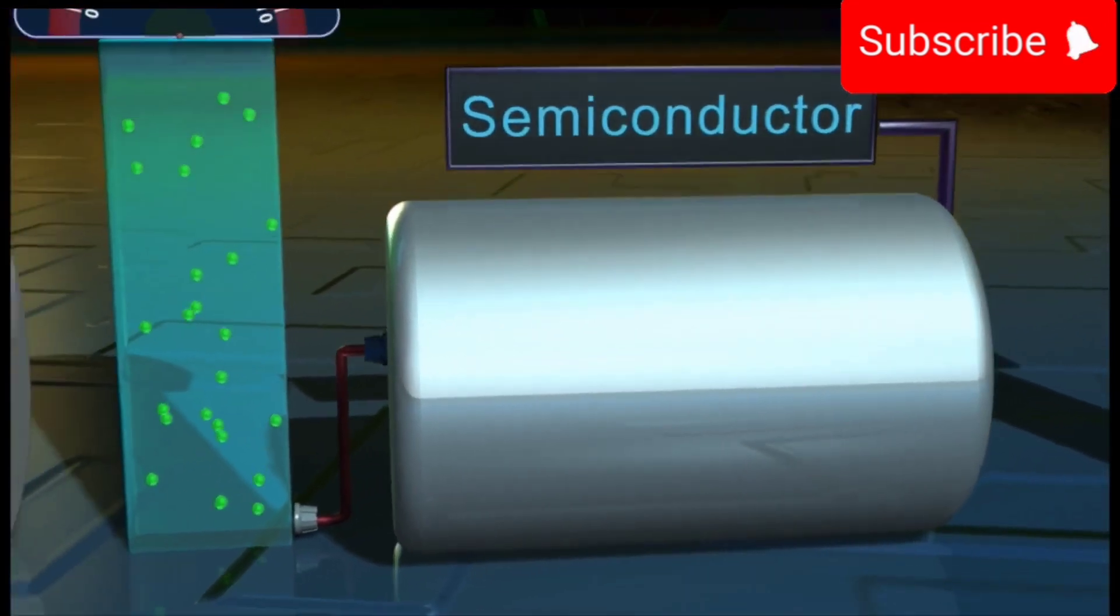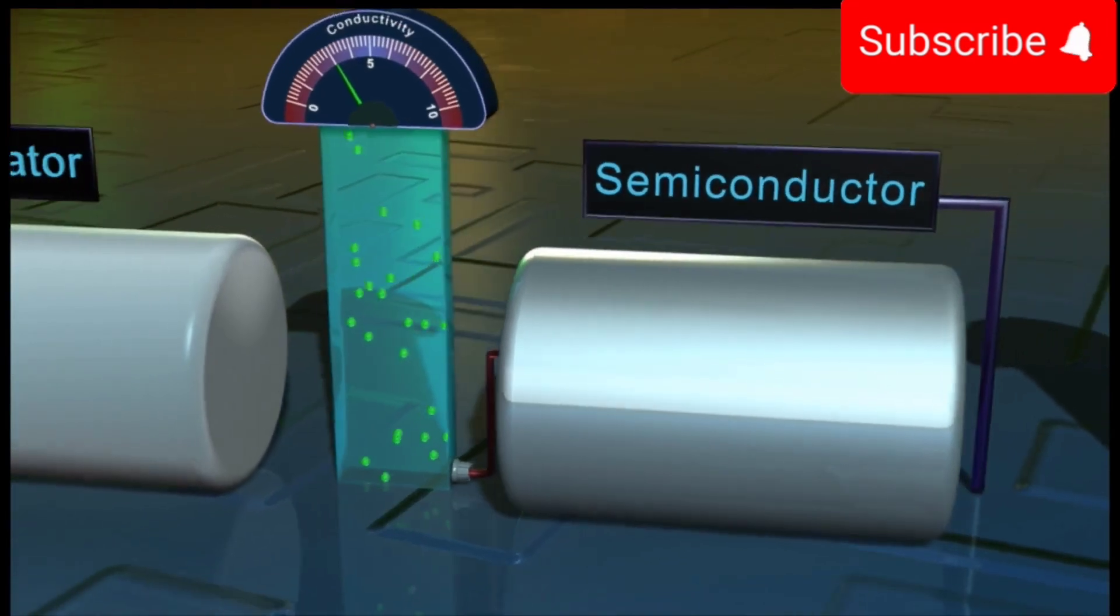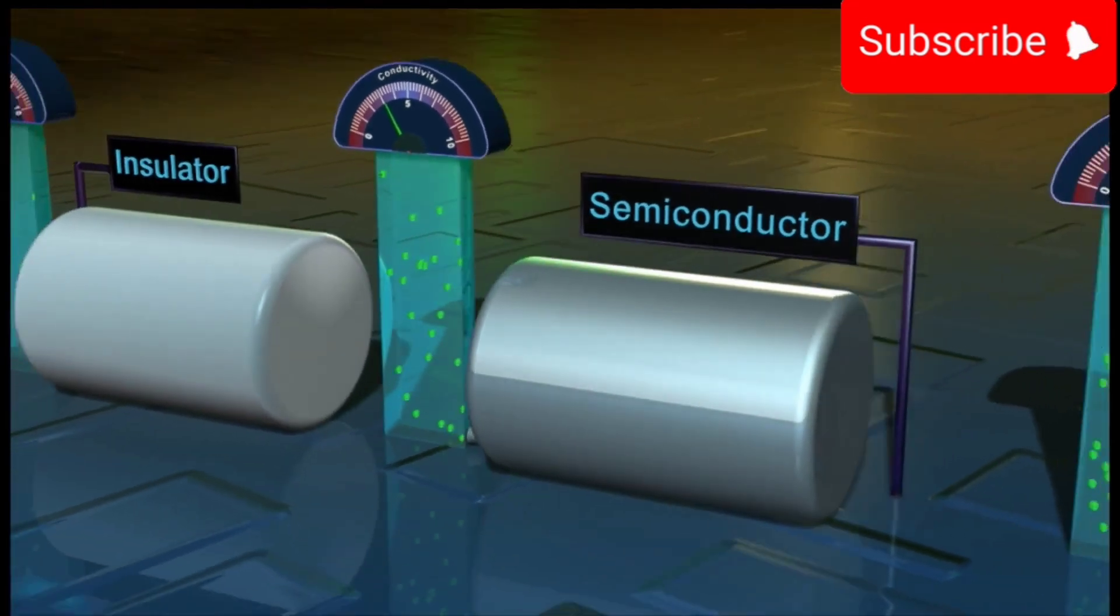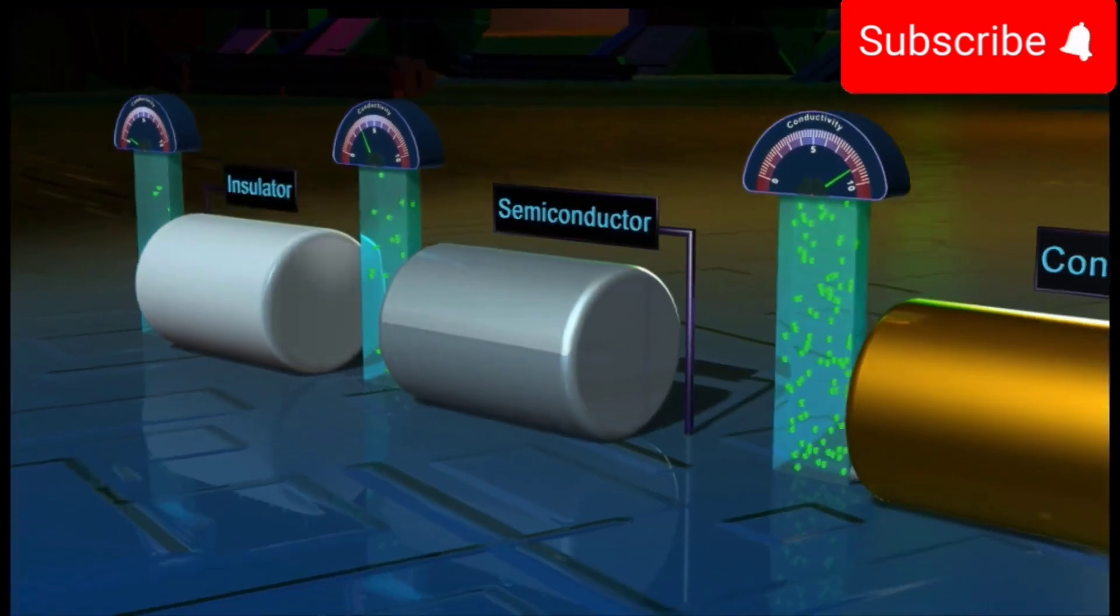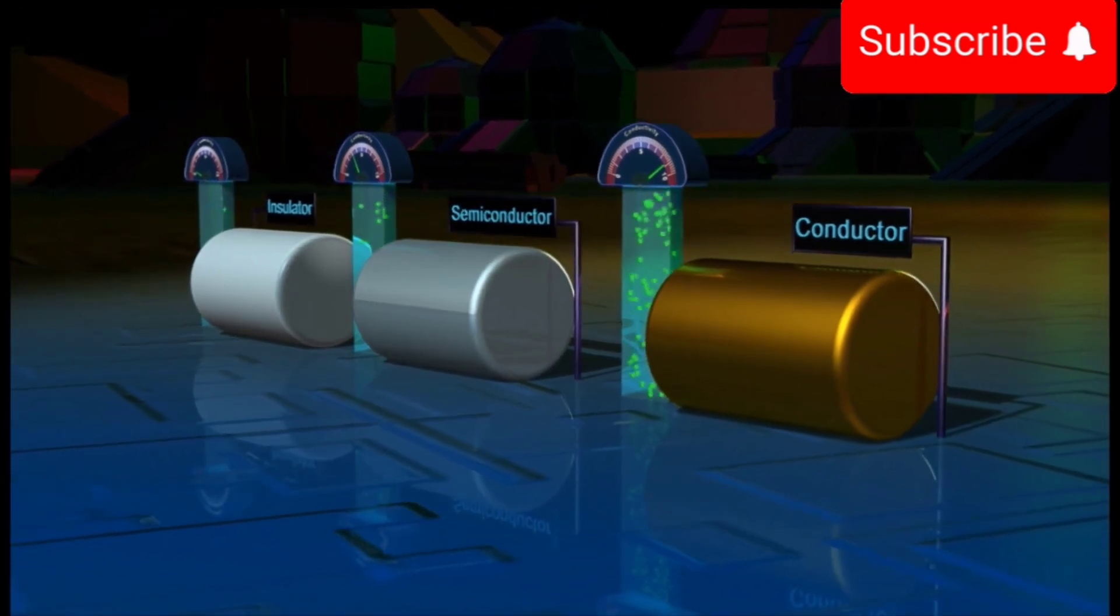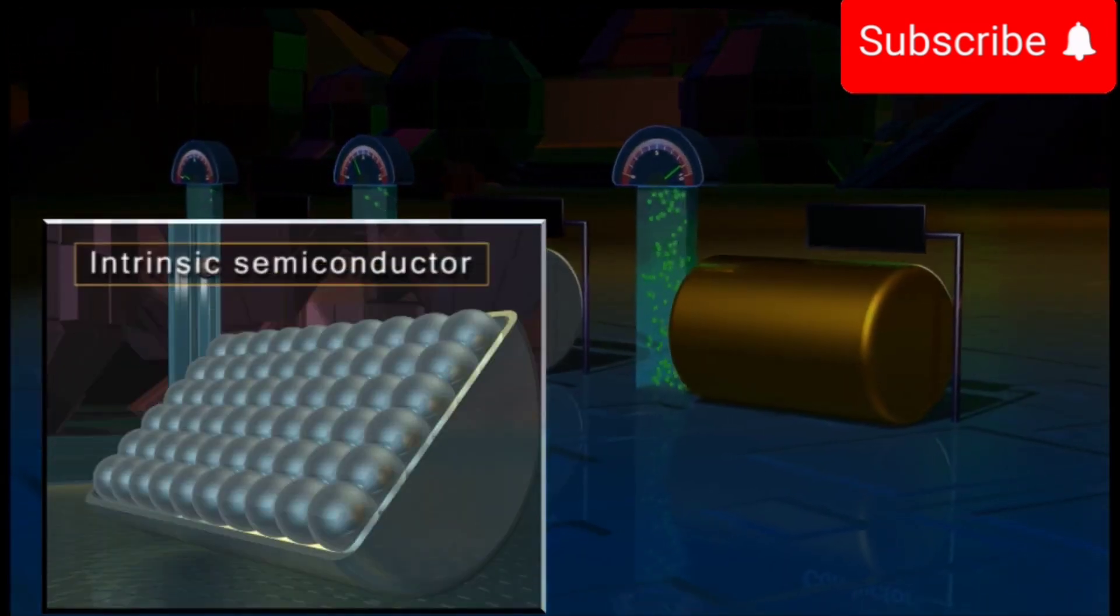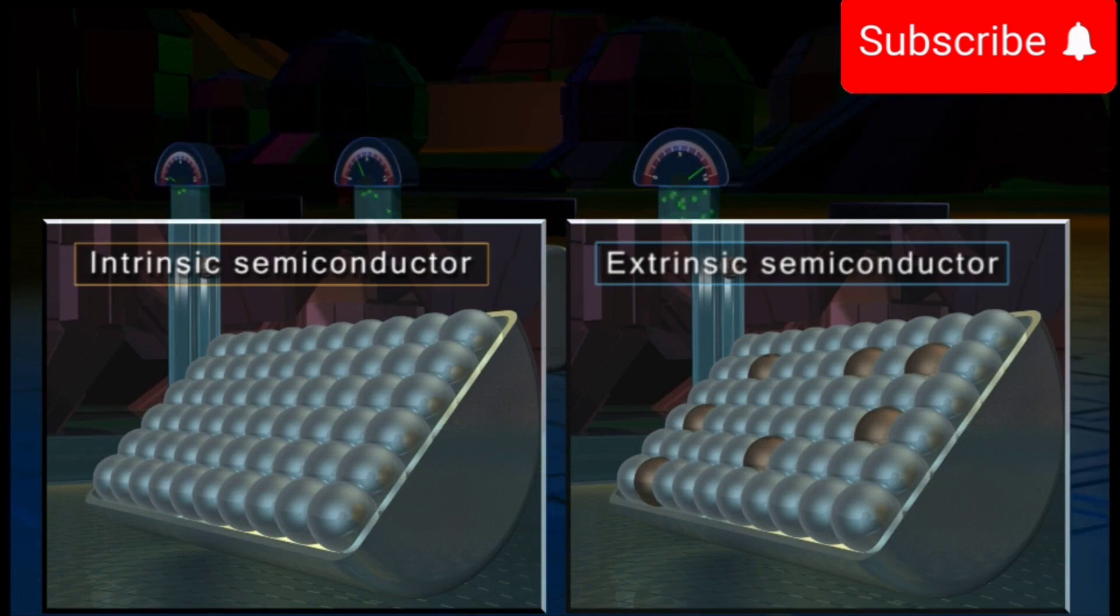We have already studied that semiconductors are substances having conductivity between that of an insulator and a conductor. Semiconductors are of two types: intrinsic semiconductors and extrinsic semiconductors.